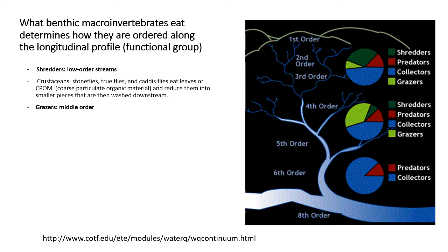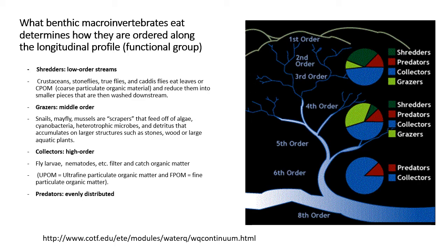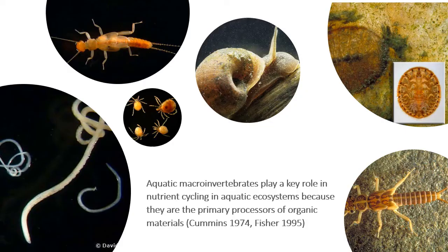Recall that what benthic macroinvertebrates eat determines how they are ordered along the longitudinal profile, or functional group. Shredders occur in low-order streams, grazers in the middle order, and collectors in the high-order streams. With the exception of the predators, all these organisms feed directly from plant material.